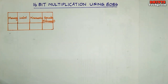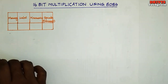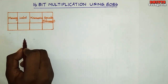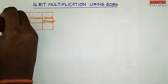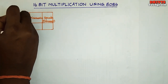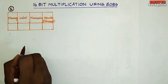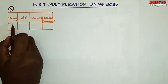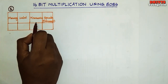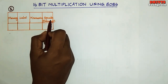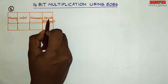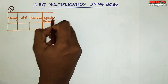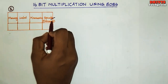Welcome to 16-Bit Multiplication using 8086. First, we have already seen the previous video. The very first step is to put the box, mentioning the Memory, Label, Mnemonics, and Opcode. You can write the comment.